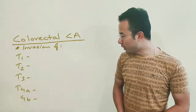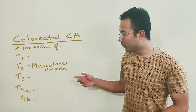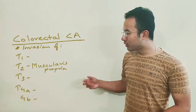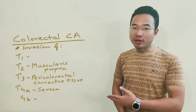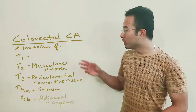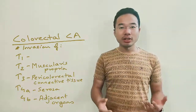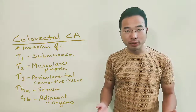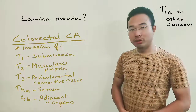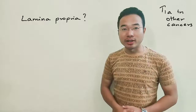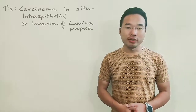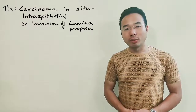For colorectal cancer, the T stages are T1, T2, T3, T4a, and T4b. T2 is muscularis propria, T3 is pericholic or perirectal connective tissue, T4a is invasion of the serosa or visceral peritoneum, and T4b is invasion into adjacent organs. T1 is invasion into the submucosa. Since there is no T1a, invasion into the lamina propria is included in TIS — carcinoma in situ, intraepithelial, or invasion into the lamina propria.